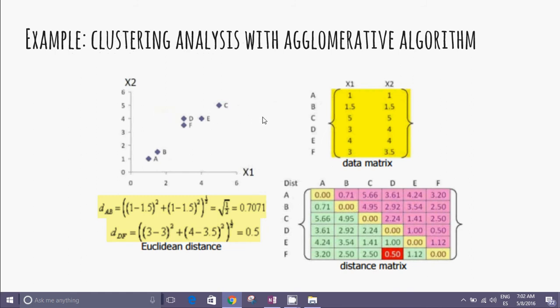We can see a data matrix, this representation graphical, over the features x1 and x2. We can calculate Euclidean distance and form a distance matrix. Symmetrical. The distance between B and A is the same between A and B.